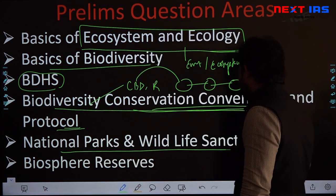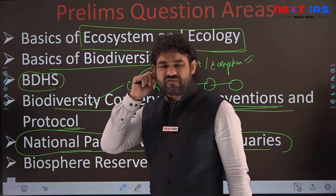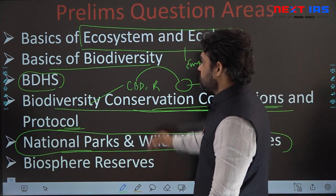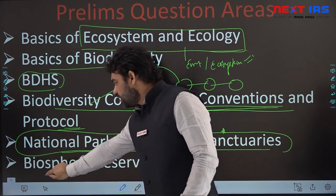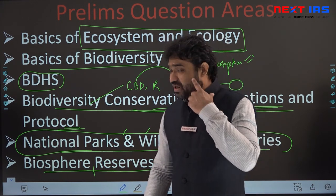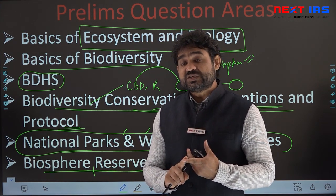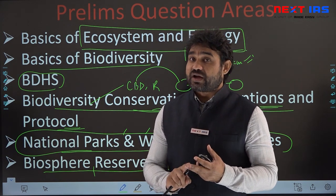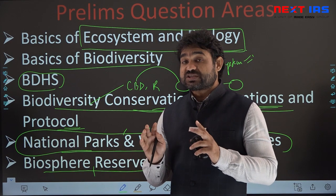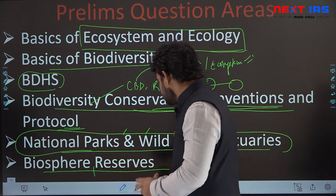National parks and wildlife sanctuaries are one of the most famous and important areas for the civil services prelims examination. Almost every year we have seen questions from this area — in fact, sometimes more questions come from here than from conceptual understanding of ecosystem, ecology, and biodiversity. Questions on biosphere reserves also come. Key aspects tested include the difference between national parks, wildlife sanctuaries, biosphere reserves and other protected areas, where they are located, species found there, climatic conditions, and indicator, flagship, or umbrella species.